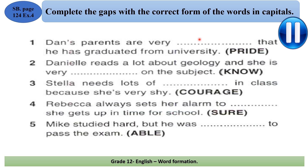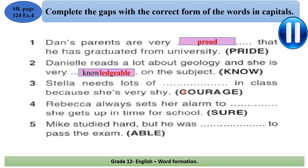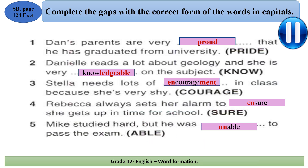Now let's check our answers. Number one: 'very ___' — 'very' is an adverb, so we need an adjective → 'very proud'. Number two: 'she is very ___' — adverb, needs an adjective from 'know' → 'knowledgeable'. Number three: 'Stella needs a lot of ___' — I need a noun from 'carriage', but here I need another noun → 'encouragement'. Number four: 'Rebika always ___ that' — I need a verb from 'sure' → 'to ensure'. Number five: contrast word 'but' — 'he was ___': the opposite of 'able' → 'unable'.